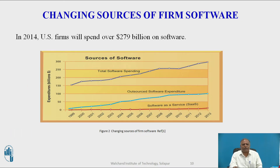Changing Sources of Firm Software. In 2014, US firms spent $279 billion on software; about 35% originated outside the firm, either from enterprise software vendors selling firm-wide applications or individual application service providers leasing or selling software modules. Another 4% was provided by SaaS vendors as an online cloud-based service. A diagram shows total software spending, outsourced software expenditure, and software-as-a-service over time, with years on the x-axis and expenditure on the y-axis.